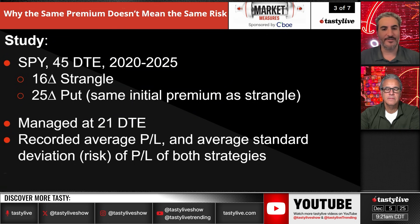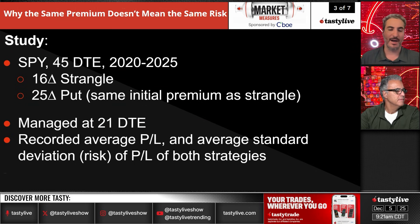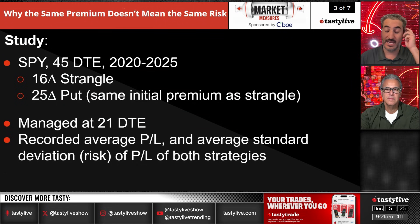So SPY 45 days, and we're doing this study from 2020 to 2025. We're looking at the 16 delta strangle versus the 25 delta put — roughly the same amount of premium — managing these trades at 21 days, recording average P&L, standard deviation of risk, CVAR, and P&L for both strategies.